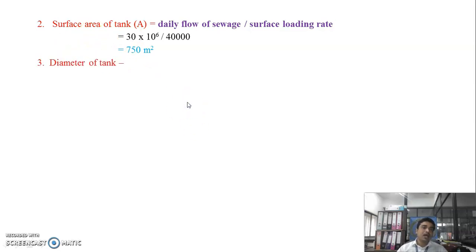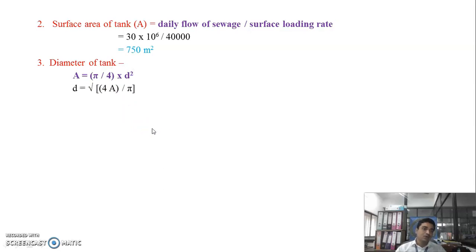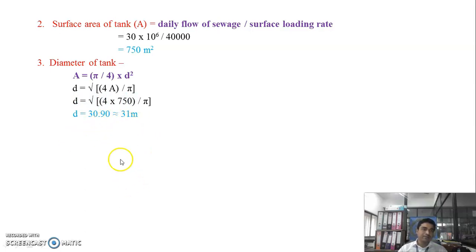Next, find the diameter of the tank. Using the equation: area = (π/4) × d², the diameter d = √(4A/π) = √(4 × 750 / π) = 30.9 meters, approximately equal to 31 meters.